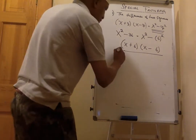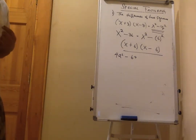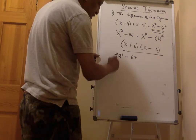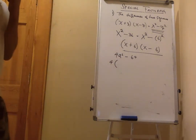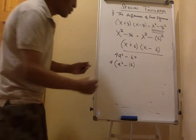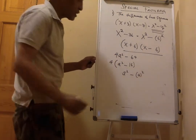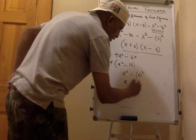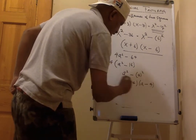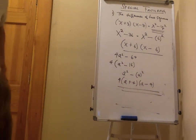Let's do another one: 4a squared minus 64. At this juncture, we notice the greatest common factor between 4 and 64 is 4. Factor out 4 to get 4(a squared minus 16). Then a squared minus 16 is the same as a squared minus 4 squared. Following the rubric, we rewrite it as two binomials — a and 4, a and 4 — one plus, one minus: 4(a+4)(a-4).